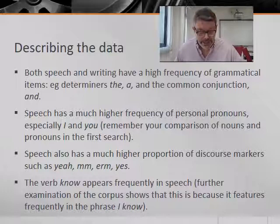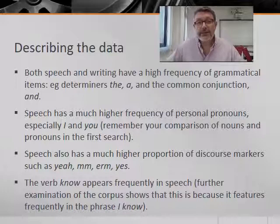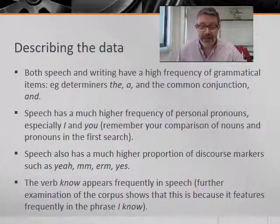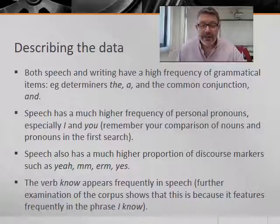As we would expect, the CANCODE and CIC data confirms a high number of instances of the articles 'a' and 'the' in both everyday speech and writing, as well as the common occurrence of the basic additive conjunction 'and'. However, if we look more closely at the items that occur most commonly in speech as opposed to writing, we begin to see a pattern. 'I' and 'you' occur much more frequently in speech than in writing — three times as often in each case. Spoken language also has a high frequency of tokens like 'yeah', and markers of agreement or hesitation like 'mmm' and 'erm', which obviously don't appear so frequently in writing.